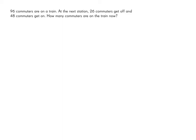Let's begin learning about order of operations with this word problem. 96 commuters are on a train. At the next station, 26 commuters get off and 48 commuters get on. How many commuters are on the train now? We can actually write this problem as one numeric expression.